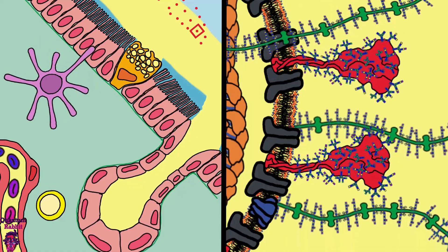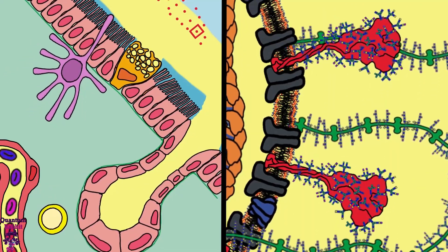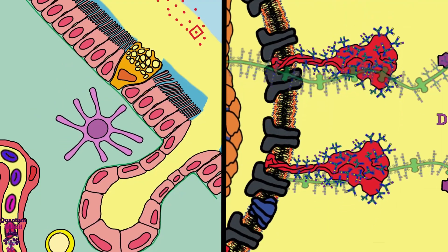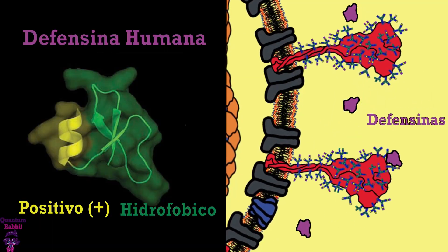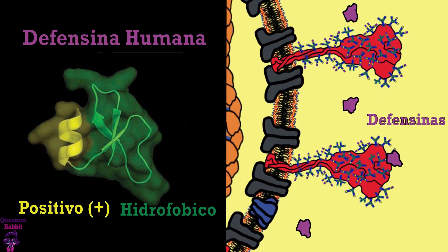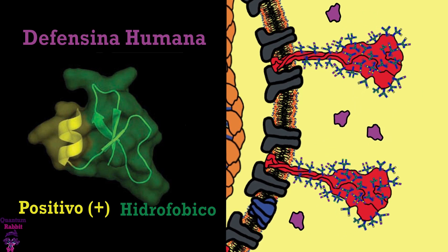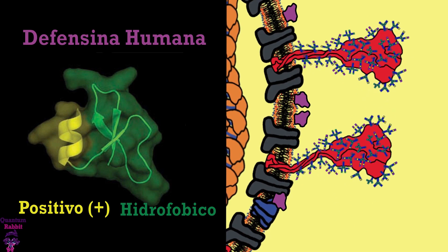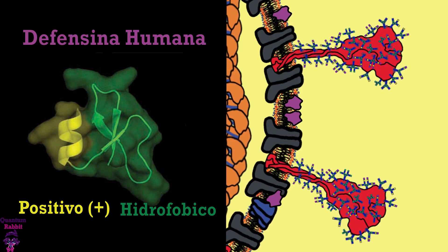But then the virion is attacked by proteins called defensins. These proteins contain a positively charged part and a hydrophobic part. When approaching the viral membrane, the defensins are attracted by the negative charge of the phospholipids. Then their hydrophobic part fits into the membrane and destabilizes it, killing the virion and breaking it open, causing its contents to spill out.